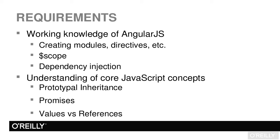Secondly, you want a good understanding of scope and how it can propagate throughout an entire application, and even the different ways that it can be inherited or isolated based on your directive. Next, you want a good understanding of dependency injection as well, and how that can be used to pull in different bits of information as well as share that information in a single way across your entire app.